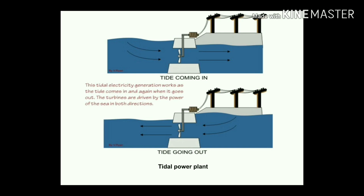Next, tidal power plants. With the utilization of tides coming in, the incoming water causes the rotor to rotate and generate electricity. Once the tide goes out, it also generates energy. So both the inward and outward flow of water generates electricity.